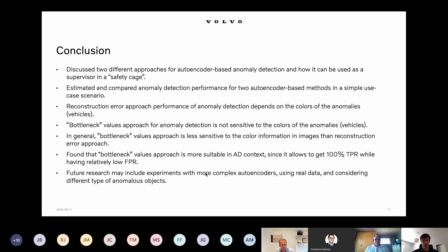Future research may need to include experiments with more complex autoencoder architectures, because the architecture I showed was a simple one with only three convolutional and three deconvolutional layers in the encoder and decoder. More complicated autoencoders may allow us to achieve a better score.